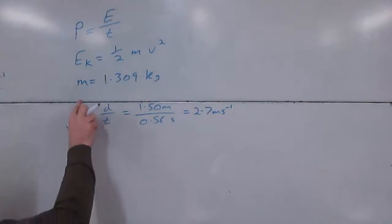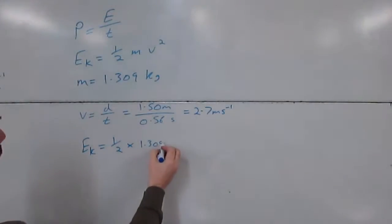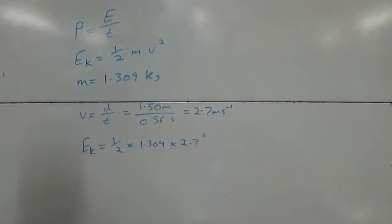Once we've got the speed and the mass, we can work out the kinetic energy. So that's Ek equals half times the mass, 1.309 times 2.7. Don't forget to square that value. That should give you an answer of approximately 4.8 joules. I've rounded mine to two significant figures.